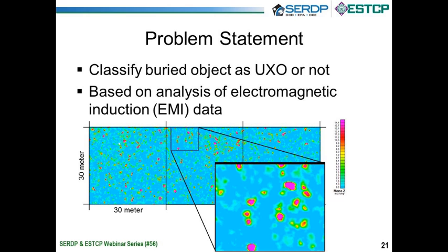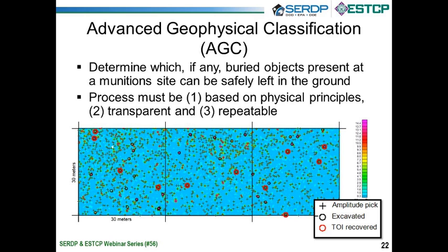The focus of this brief addresses the problem of classifying a buried object as UXO or not, based on the analysis of electromagnetic induction data. The geophysical data in this picture were acquired during a live site demonstration program, presented in a false color image in plan map format — eastings on the x-axis, northings on the y-axis. Blue colors represent site background, and brightly colored anomalies identify regions where buried metal is present. Our challenge is to decide which anomalies identify fragments and which identify targets of interest.